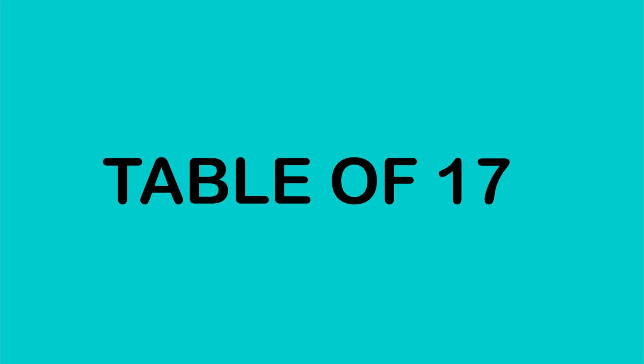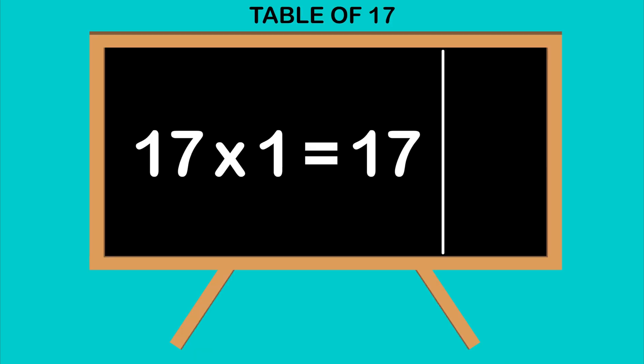Table of 17: 17 ones are 17, 17 twos are 34, 17 threes are 51, 17 fours are 68.